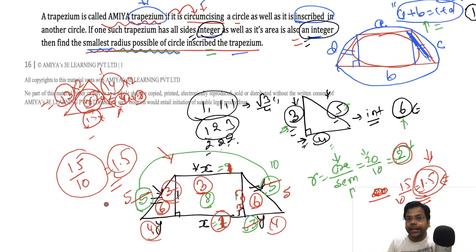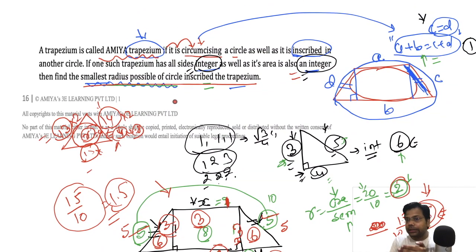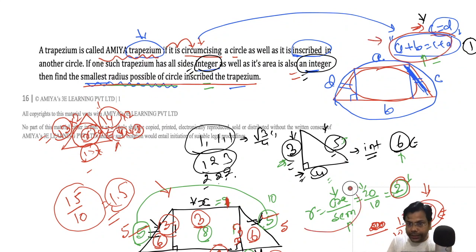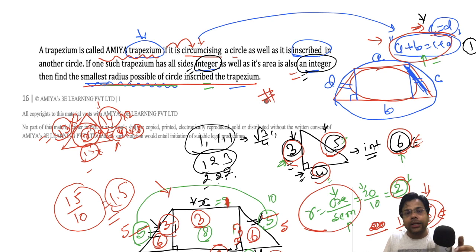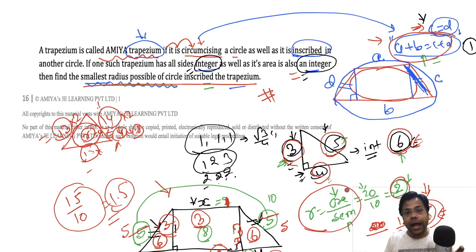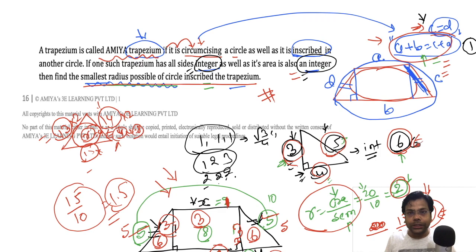To recap: if a trapezium is inscribed inside a circle, it is an isosceles trapezium. If any quadrilateral circumscribes a circle, the summation of opposite sides are equal. Then I used the in-radius formula — area by semi-perimeter. The 3-4-5 triangle gives integer sides and integer area. The answer for the smallest in-radius of this special trapezium is 1.5. This concept-level question can appear in JEE, NTSE, or Olympiad. God bless you, happy learning, bye-bye.